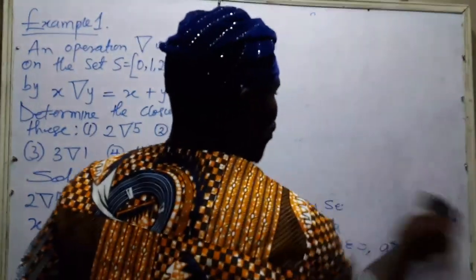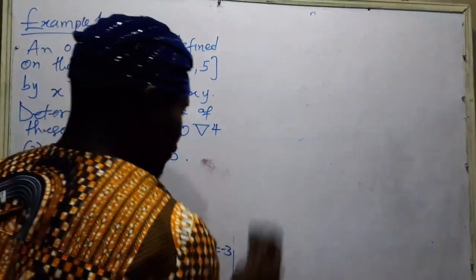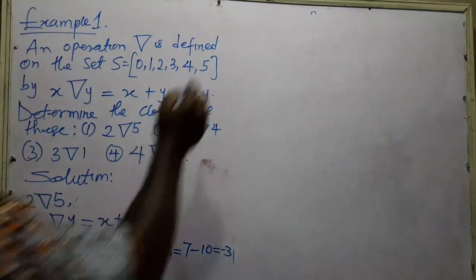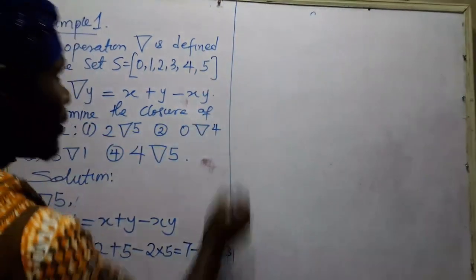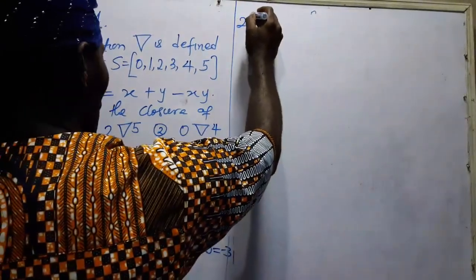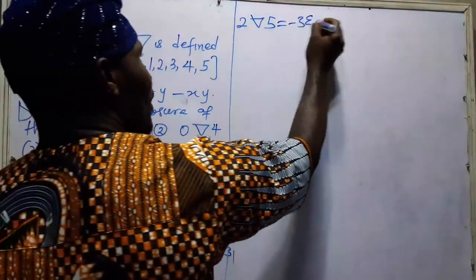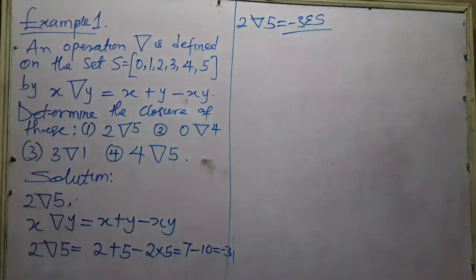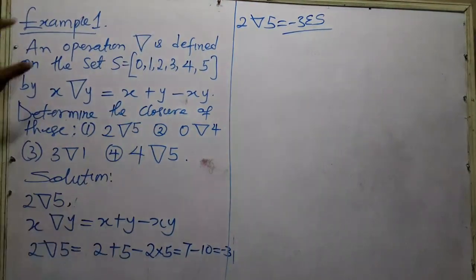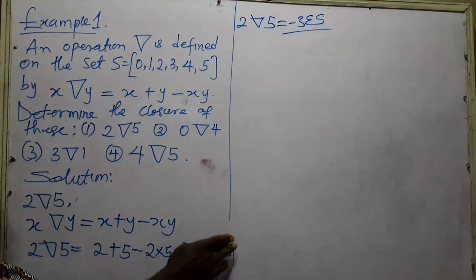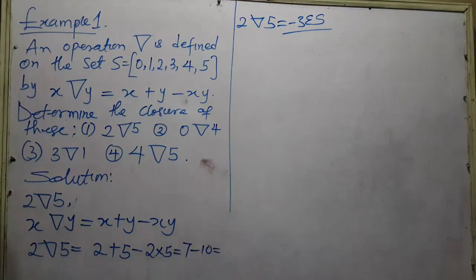We check whether minus three is among the values in the set X. Therefore, for number one, two operation five equals minus three. Minus three is not an element of X, since the elements of X go from zero to five. So two operation five is not closed.